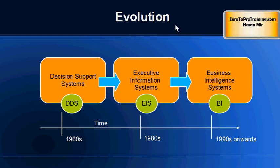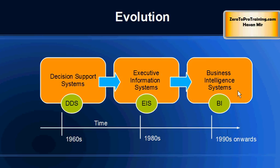At a high level, this is how the evolution took place. First, Decision Support Systems came into the picture in the 1960s, when it was realized that some kind of system had to be created to extract useful information from raw data. These were then modified into what are known as Executive Information Systems in the 1980s. Finally, in the 1990s, Business Intelligence systems came into the picture.